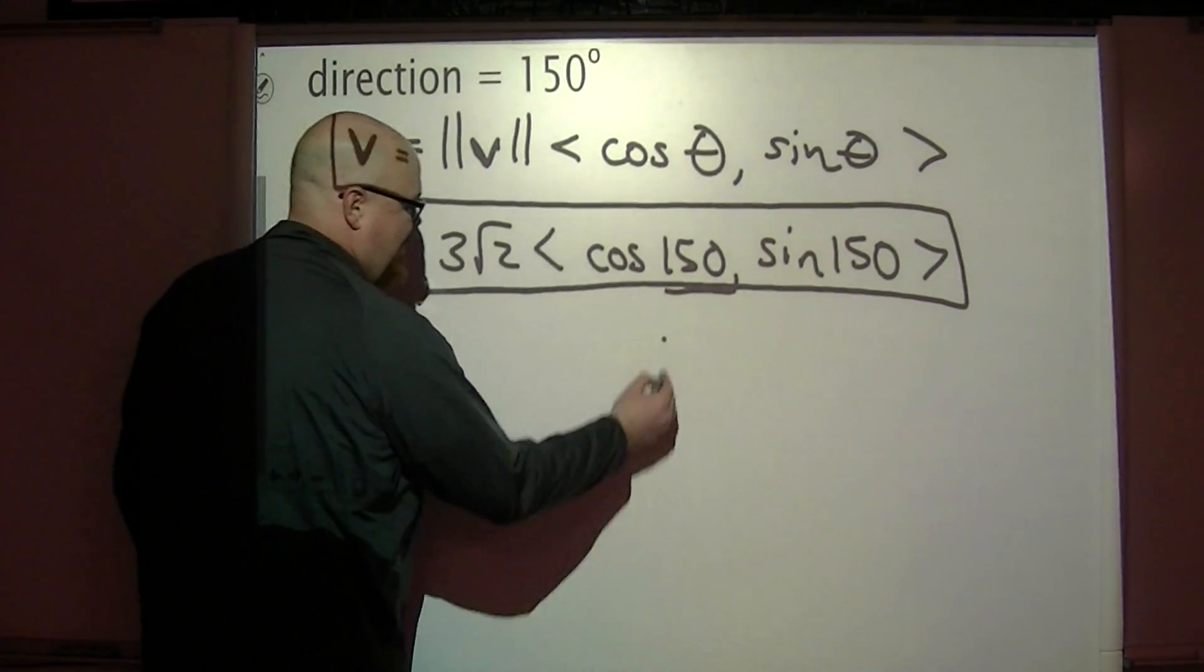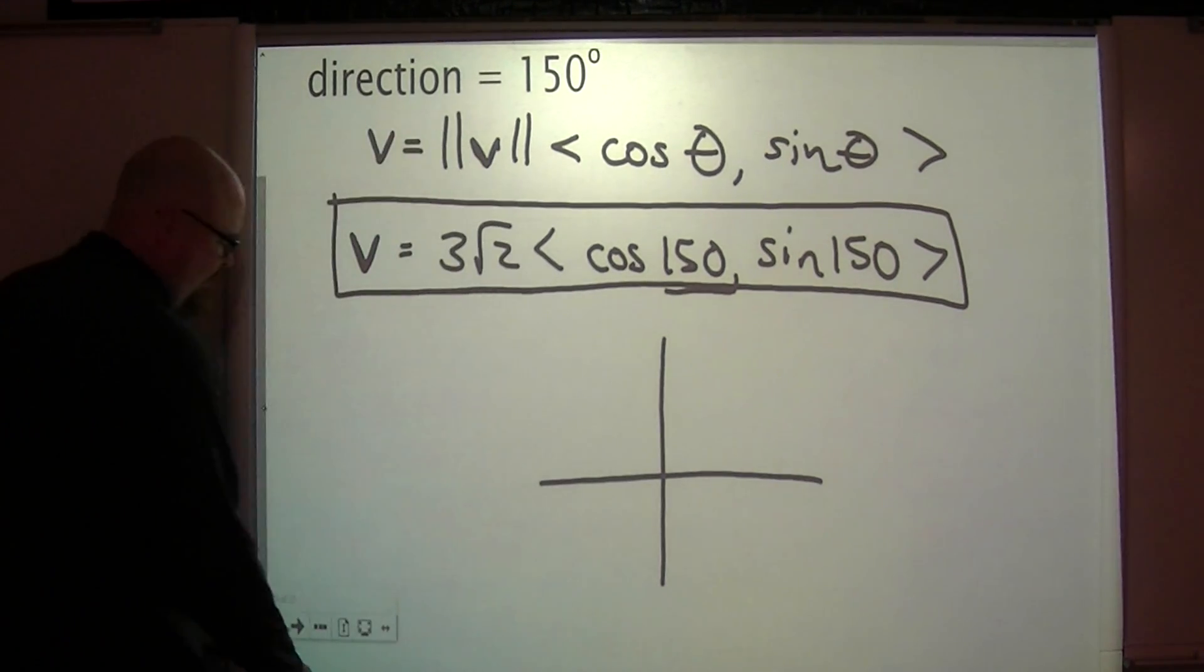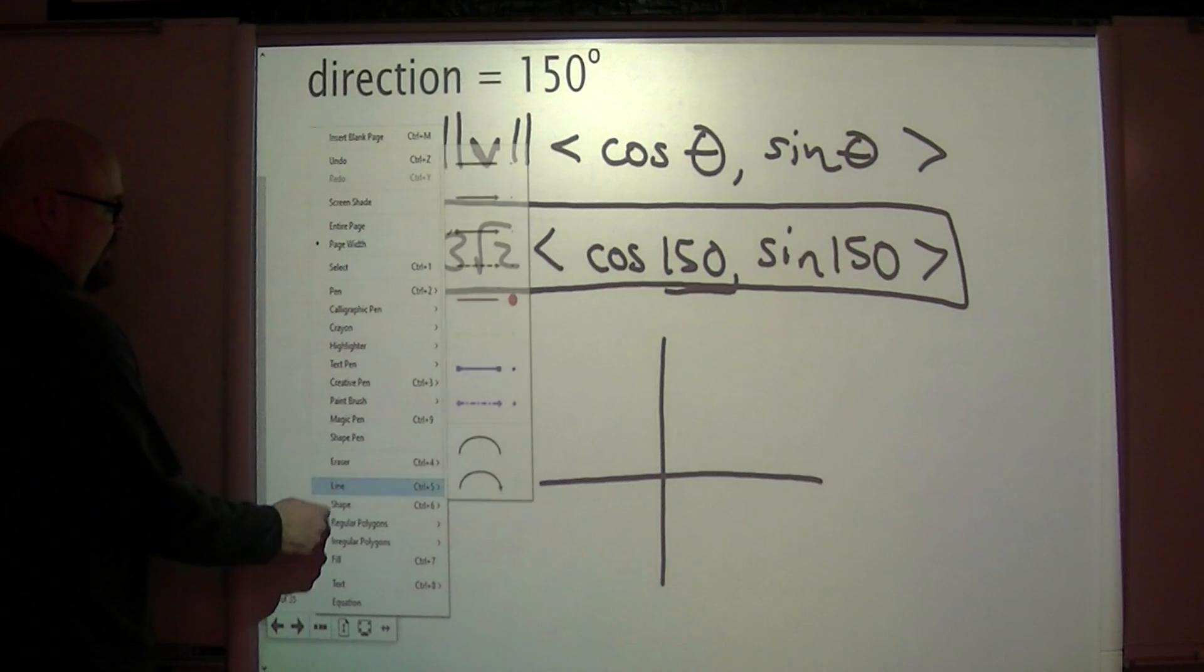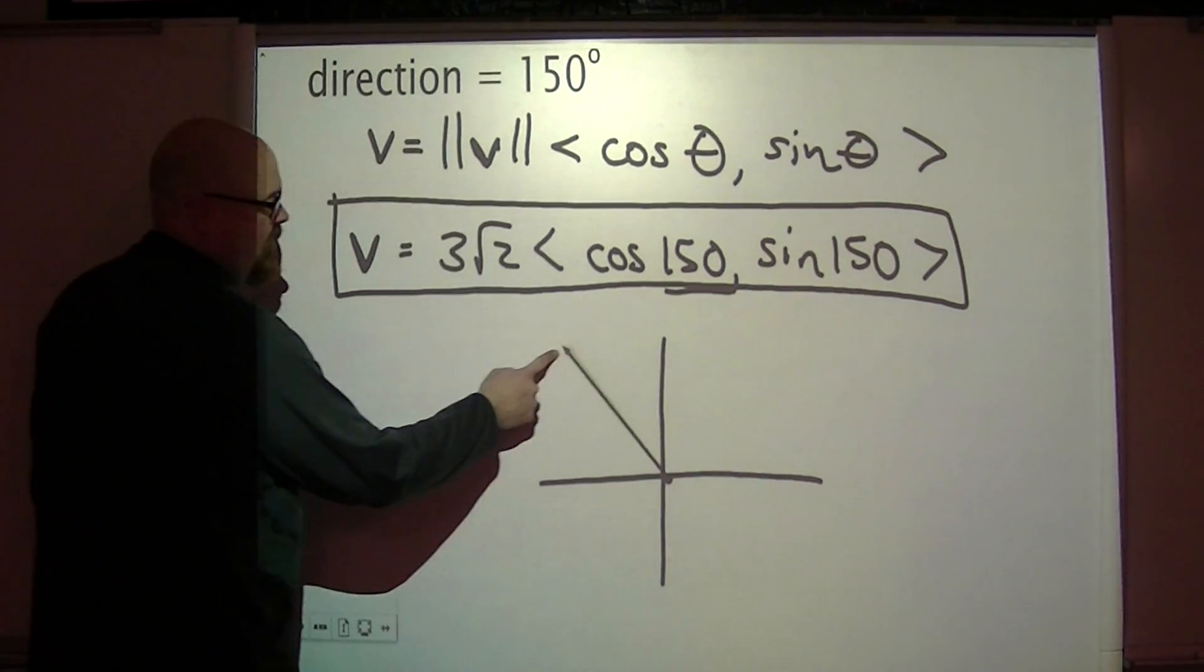If we have a vector that's traveling in 150 degree direction, starting here, traveling over here to 150 degrees.